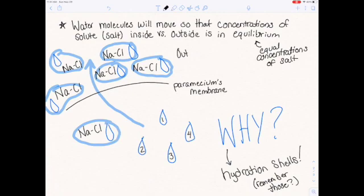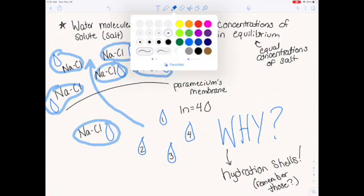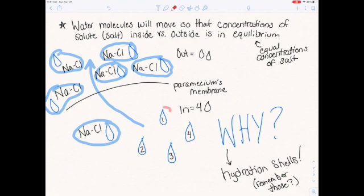Outside, because we have more salt, all those water molecules are occupied. Inside, there's less salt. So some of those water molecules are free. These are the water molecules that count when we are establishing equilibrium of water across the membrane. So if we start with zero water molecules that are free outside and four that are free inside, what's going to happen is that two of these are going to diffuse across the membrane to establish an equilibrium of free water molecules.